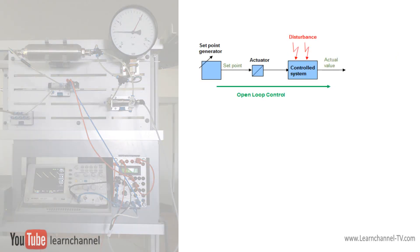An open loop control does not have a sensor and there is no feedback signal to compare the actual value with the desired value. Therefore, a reaction to disturbances is not possible.